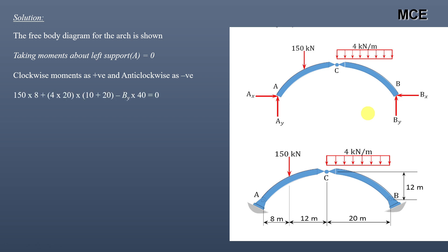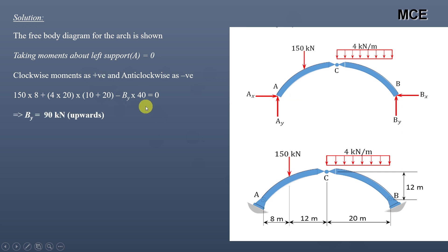The first moment about point A is due to the 150 kN load with a lever arm of 8 meters — clockwise, so it is 150 × 8. The second moment is due to the 4 kN/m UDL: 4 × 20 × (10 + 20), which is also clockwise. The third moment is due to the vertical reaction By with a lever arm of 40 meters — anti-clockwise. The moments of Ax and Bx about point A are zero since their lever arms are zero.